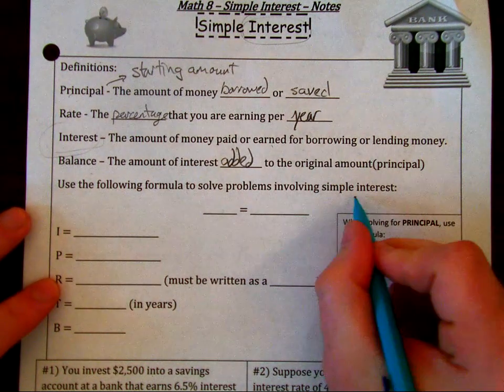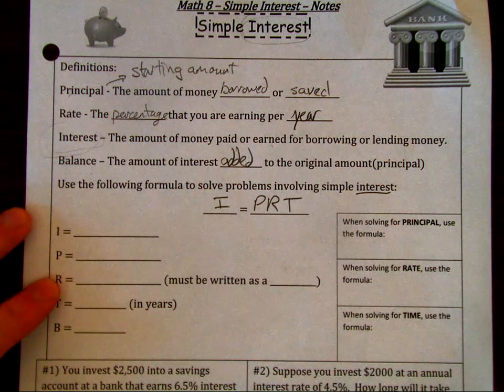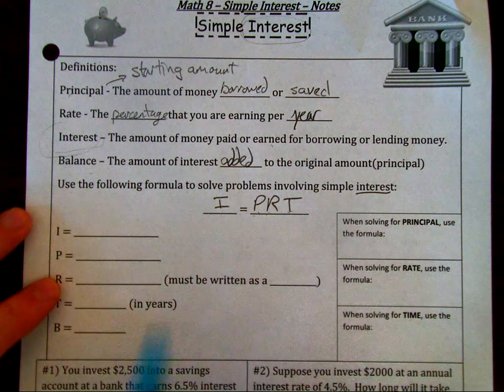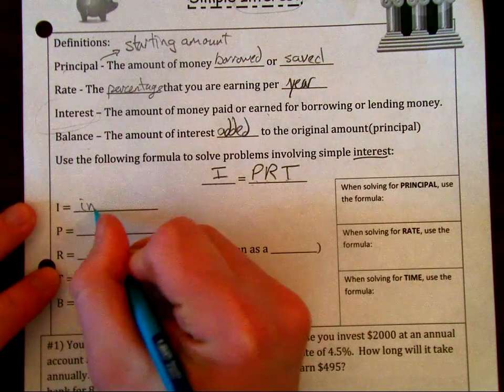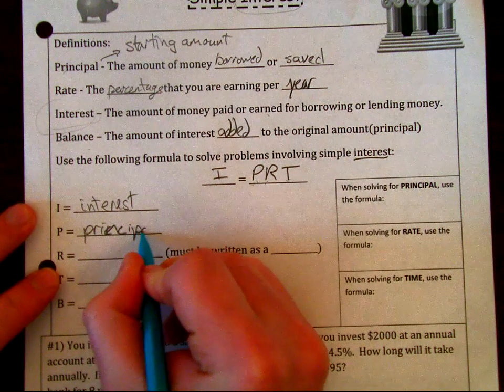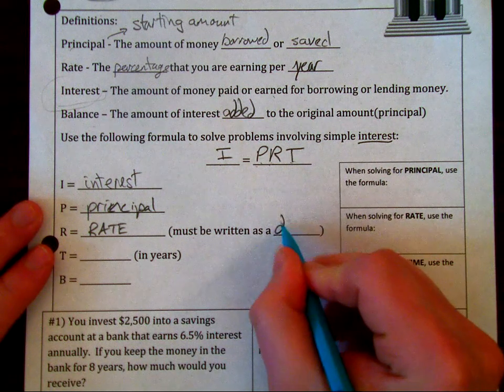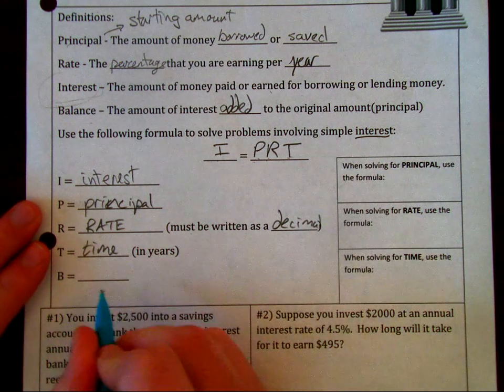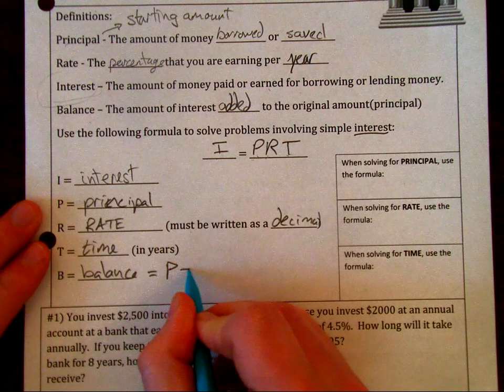Our main formula for solving for interest is going to be I equals P times R times T. Since we have these variables right next to each other, we're going to be multiplying those. Make sure we know what those letters stand for because they're not just letters, they're variables. I is interest, P is principle, R is rate and we write that as a decimal, T is time in years, and B is balance. For balance, that's just going to be our principle plus our interest.